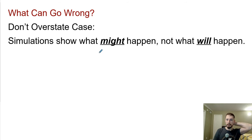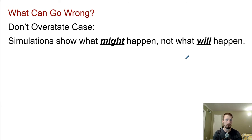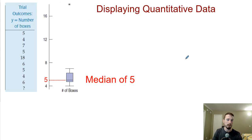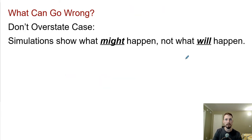What can go wrong? Simulations show what might happen, not what will happen. Just because one simulation had a trial length of four doesn't mean we should buy four boxes and expect that result. Simulations show all possible outcomes, not exactly what's going to happen. We actually need to run hundreds or thousands of simulations to hone in on the exact value, which is all really based on probability.